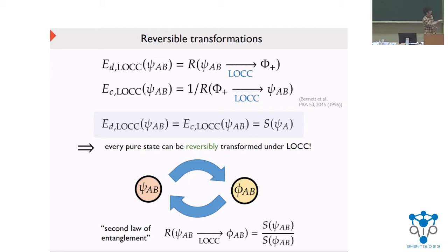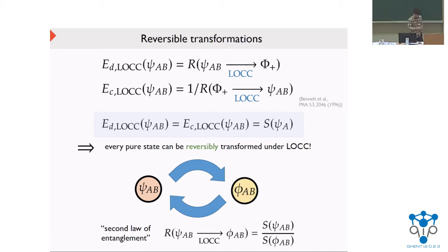This can be generalized to arbitrary states: from any psi to any phi, the rate is given by the ratio of the entropies of entanglement. This establishes what can be thought of as a second law of entanglement, because it identifies the entropy of entanglement as the unique quantity that tells us everything about converting quantum states asymptotically. This parallels thermodynamics, where entropy governs convertibility of states of a physical system. This motivated the question of how general this property is and whether we can establish a general law of this type.